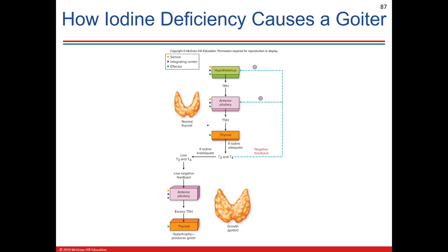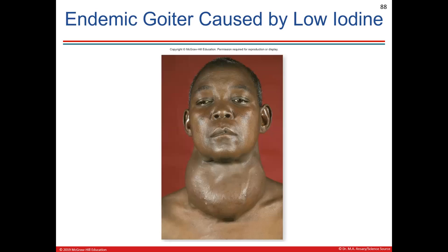Low iodine causes a goiter because without usable hormone in the blood, there's insufficient negative feedback, so the thyroid follicular cells keep making massive amounts of thyroglobulin. But without iodine, they can't make the actual hormone, so the gland just grows huge. This is called an endemic goiter — caused by low iodine. Whether treatable depends on severity and the cause.